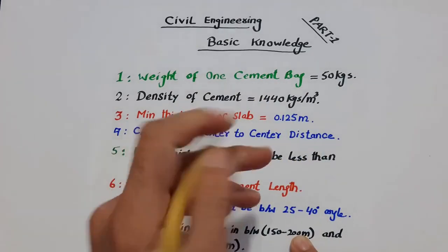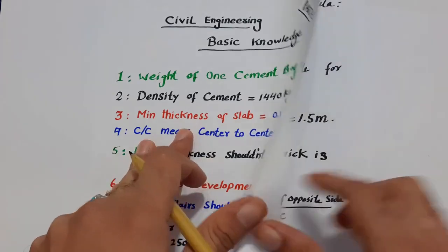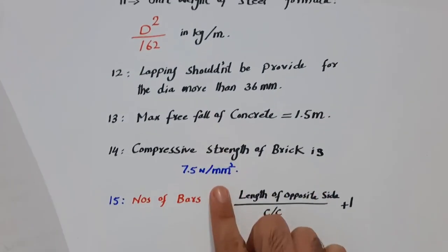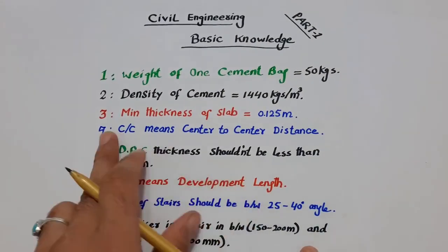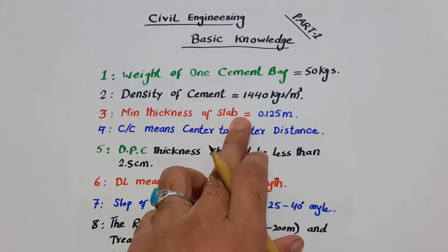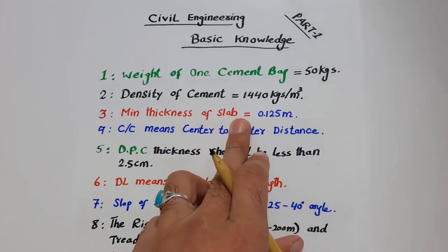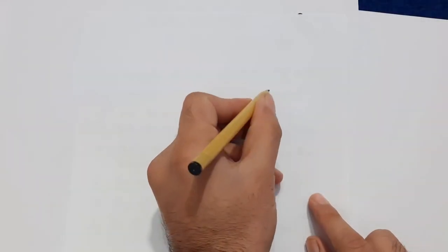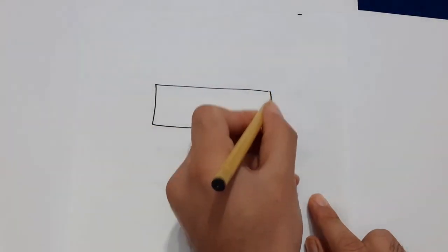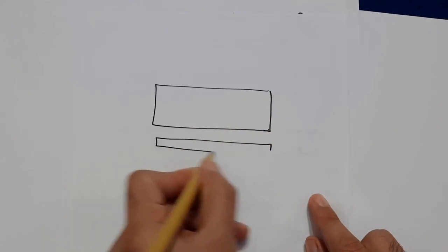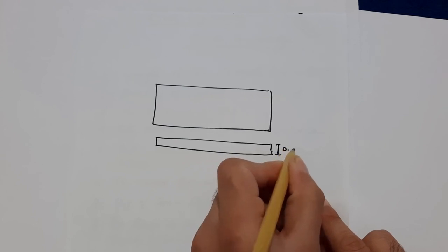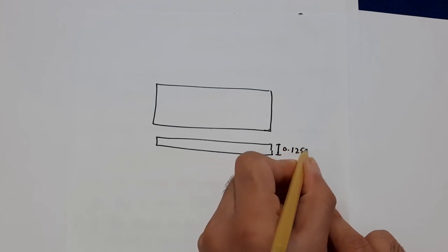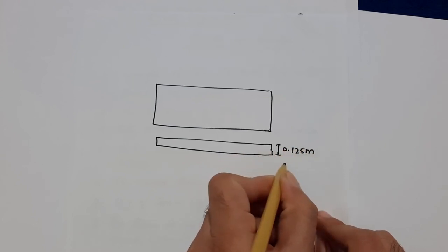The third one is the minimum thickness of slab. As you can see, this is the top slab — looking at the cross-section — the minimum thickness of the slab should be 0.125 meters, or 125 millimeters.